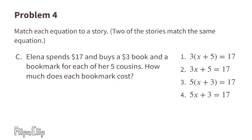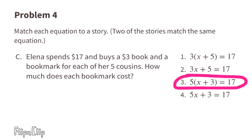Story C: Elena spends 17 dollars and buys a three-dollar book and a bookmark for each of her five cousins. How much does each bookmark cost? Think of this as five cousins times a three-dollar book plus an unknown price for the bookmark equals 17 dollars. Story C matches equation three: 5 times x plus 3 equals 17. The five represents the cousins, x is the bookmark price, and three is the book cost.